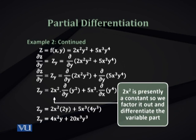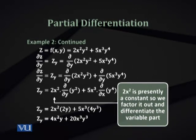Continuing Example 2 with ∂z/∂y: z_y = 2x²·(∂y²/∂y) + 5x³·(∂y⁴/∂y). The first part gives 2x²·2y = 4x²y. In the second term, y⁴ differentiates by the power rule to 4y³, multiplied by the constant 5x³, giving 20x³y³. So the final result ∂z/∂y = 4x²y + 20x³y³. Thus, with two independent variables, we obtain two first-order partial derivatives.